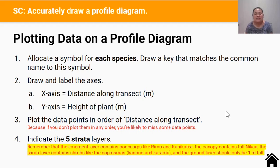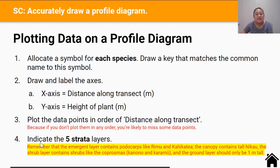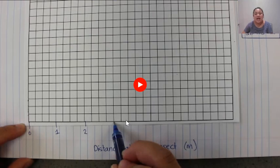Now that we've collected the data on a table we have to plot this data on a profile diagram. There are four steps. Step one: allocate a symbol for each species — you can use a triangle, a circle, whatever shape — and draw a key that matches the common name to the symbol. Step two: draw and label the axes; the x-axis is distance along transect in meters, the y-axis is height of the plant in meters. Step three: plot the data points in order of distance along transect, because if you don't plot them in order you're likely to miss some data points. Step four: indicate the five different strata layers, because a profile diagram is used to identify the different strata.